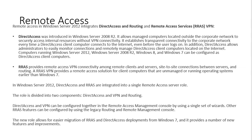Windows 8 and Windows 7 computers can be configured as DirectAccess client computers. RRAS provides remote access VPN connectivity for remote clients, as well as site-to-site connections between servers and routing. RRAS VPN can provide a remote access solution for client computers that are unmanaged or running an OS earlier than Windows 7.